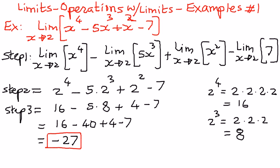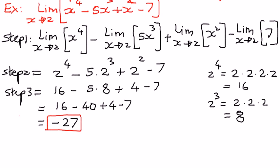So when we evaluated the limit of x to the power of 4 minus 5x to the power of 3 plus x to the power of 2 minus 7, as x approaches 2, the value came out as negative 27. This is the way we perform operations with limits.